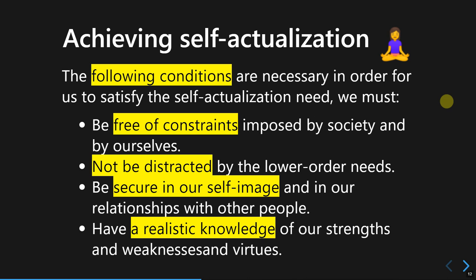The third condition is that we should be secure in our self-image, meaning we accept ourselves as who we are and have a healthy relationship with others — fulfilling the love and belonging needs, which may be hardest to achieve in adolescence. The fourth condition is that we should have realistic knowledge of our strengths and weaknesses, fully accepting ourselves so we are ready to improve to the next level.